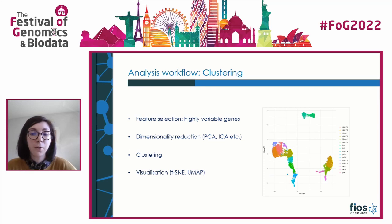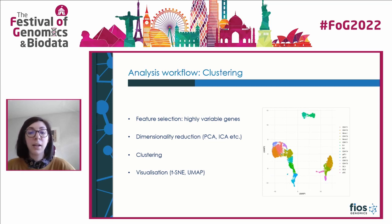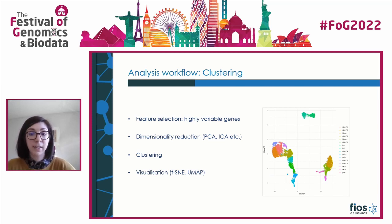Here for example we see PBMCs from a single healthy donor, which is one of the public datasets from 10x Genomics. Each dot represents a cell and is coloured based on the cluster identity identified during clustering.